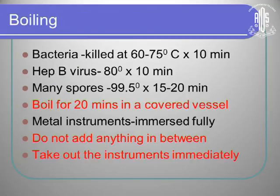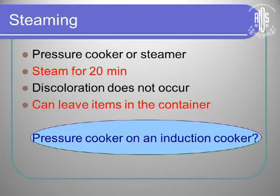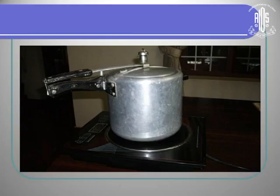If you are boiling, it has to be done for 20 minutes in a covered vessel — do not add anything into it. A common mistake is adding instruments while the sterilizer is already on — that is not proper. You must take out the instruments after 20 minutes. If you are steaming in a pressure cooker, you can leave the items in the container until you are ready to use them.